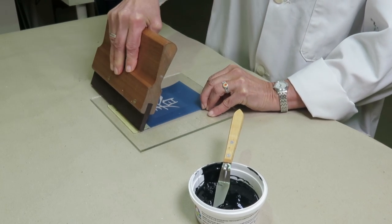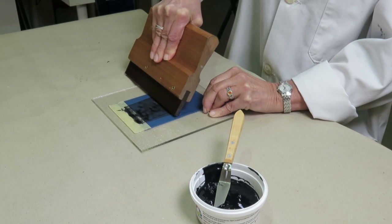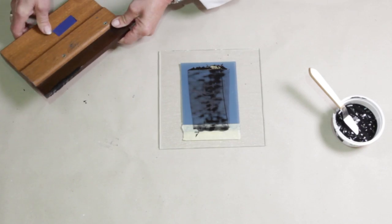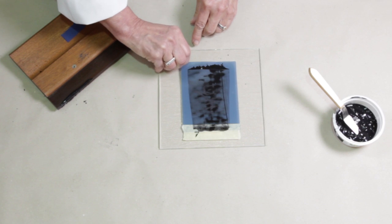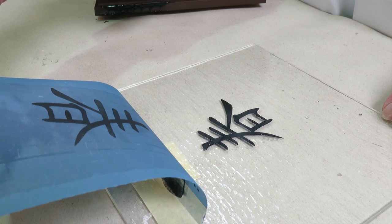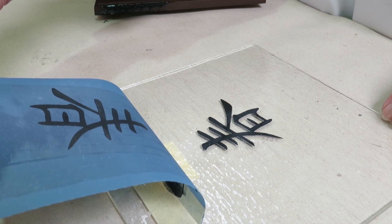Position the squeegee at a 45 degree angle and pull it towards you using even pressure to pass the enamel through the screen. Lift the screen carefully and examine the print. You can repeat the printing process if necessary.